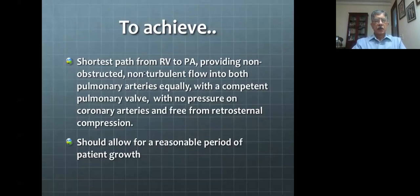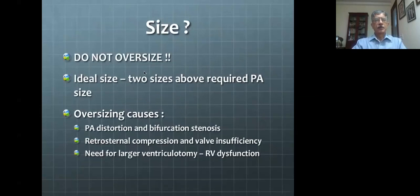When it comes to size, the most important principle is not to oversize. There is a tendency for some surgeons to put as large a size as possible, thinking this will push the time for replacement further — but that is not entirely true. The ideal size is roughly about two sizes above the required pulmonary artery size for that patient.